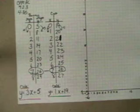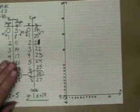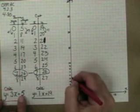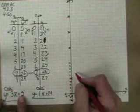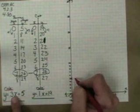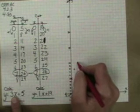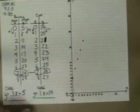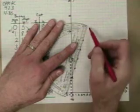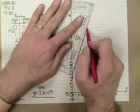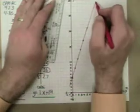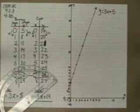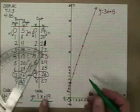I'm going to solve it by graphing. I'll do one rule in red and one in green so we can see them. I've already chosen a scale of one. My starting point for the bunny is five — I go over one and up three, stair-stepping up. The rule is y equals three x plus five. The other rule is y equals one x plus nineteen, starting at nineteen on the y-axis, going over one and up one each time.